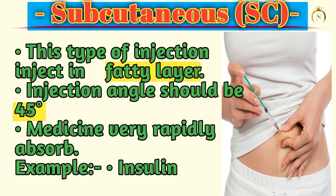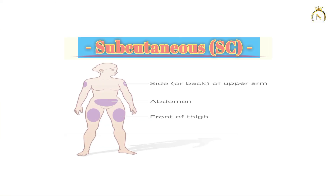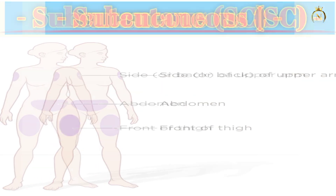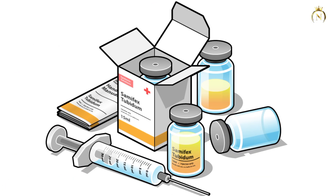What are the sites where we are going to give the subcutaneous injection? The first site is the back of the upper arm — we give subcutaneous injections on the upper arm side. Sometimes the abdomen — mostly the abdomen. And the front thigh — both front thighs — we also give subcutaneous injections there.